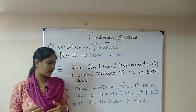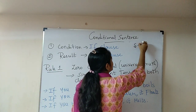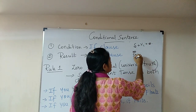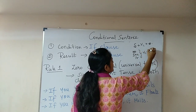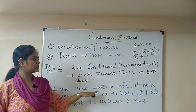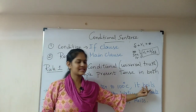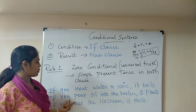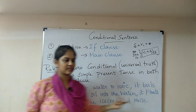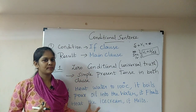Let's look at examples. The rule for simple present tense is: subject + verb + object. For he/she/it subjects, we add 's' or 'es' to the verb. Example: 'If you heat water to 100 degrees Celsius, it boils.' Another: 'If you pour oil into water, it floats.' And: 'If you heat ice cream, it melts.' In both clauses, simple present tense is used throughout.